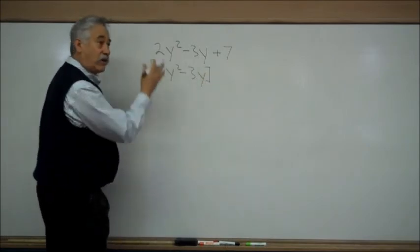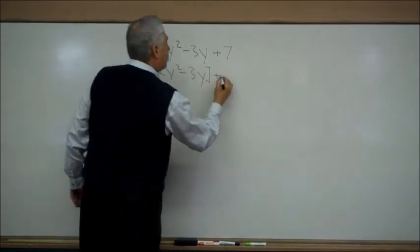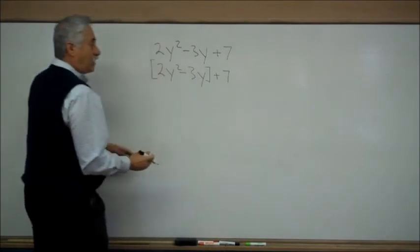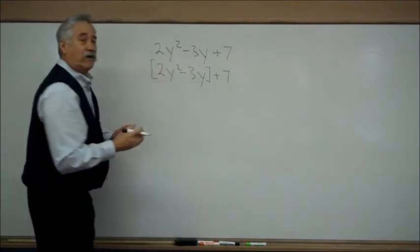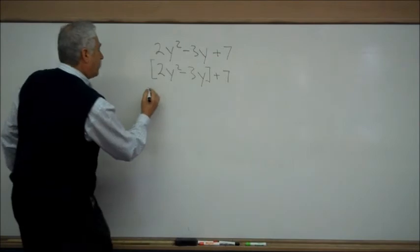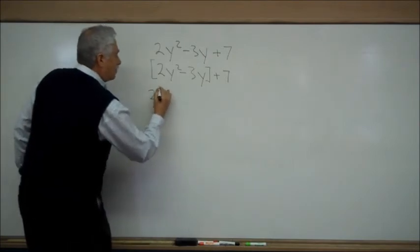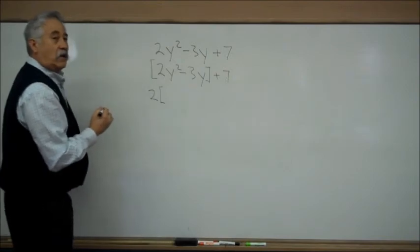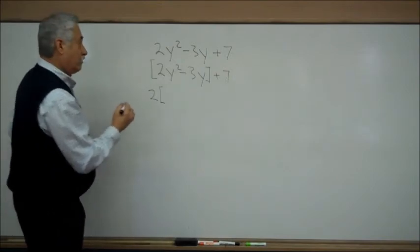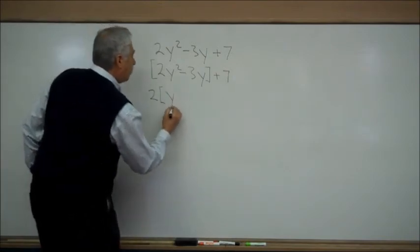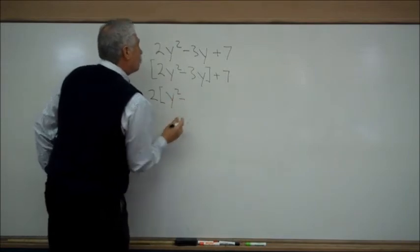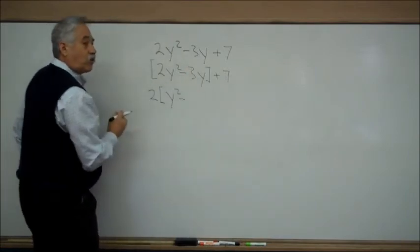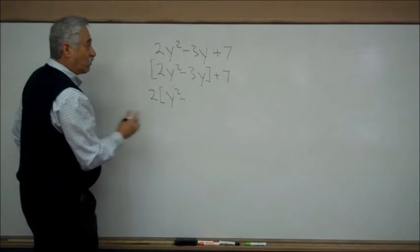Once you've bracketed off the two variables, I need to factor out the lead term, the 2. Now, this is not a choice. It doesn't matter whether 2 is a factor or a 3. We must factor out the lead term. No problem. Factoring out a 2 means dividing the 3 by a 2. We already have the minus sign.